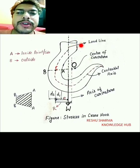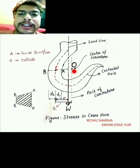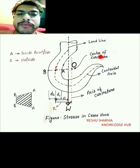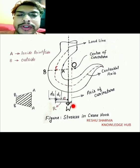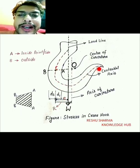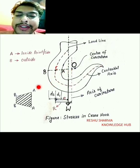This is our load line on which a load W is acting. This point O is our center of curvature, and the X-axis passing through it we call the axis of curvature. This dotted line is our centroidal axis.